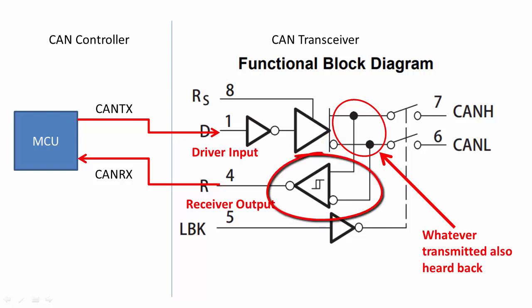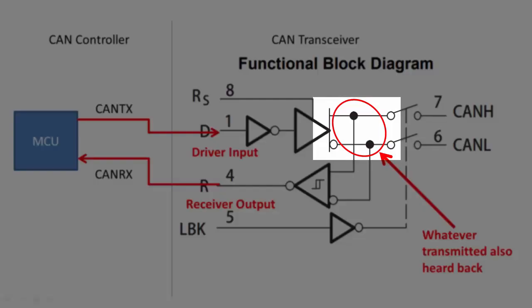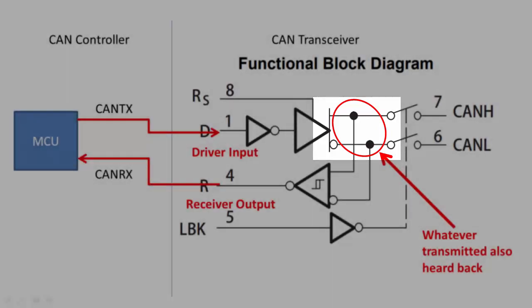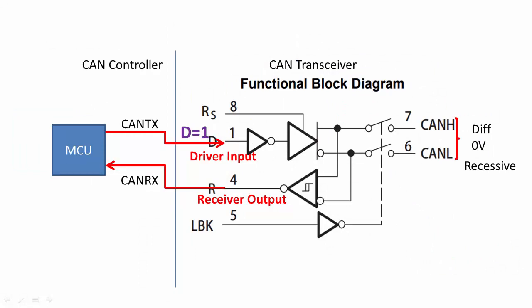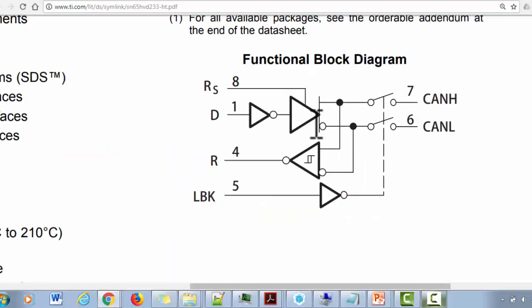You can also see that CAN-H and CAN-L signals are looped back to the receiver engine — that's how reception takes place. Whatever you transmit is also sensed by the receiver engine of the transceiver. So if D equals 1, CAN-H and CAN-L will go to the recessive state; if D equals 0, CAN-H and CAN-L will go to the dominant state.